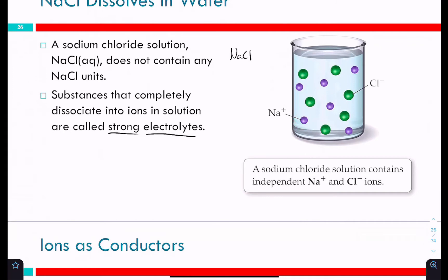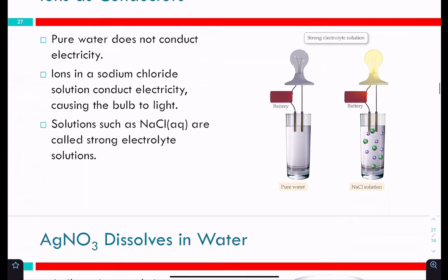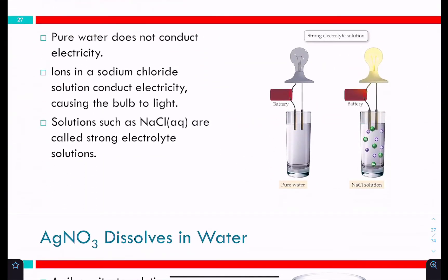Strong electrolytes also conduct electricity. In pure water there are no ions, so electricity cannot be conducted. In any electrical circuit there's a positive end and a negative end — if you complete a circuit, all the current runs through. It's like jumping a car battery: if you connect both ends and complete the circuit, the cables can catch on fire or melt.